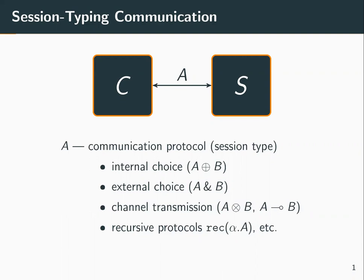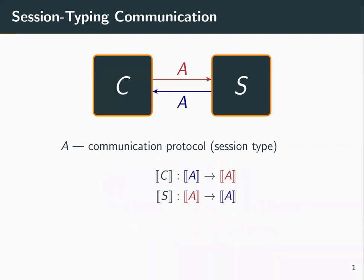Instead of having a single channel or wire carrying bi-directional communications, we'll imagine that we have a pair of wires: a red wire that carries communications from C to S, and a blue wire that carries communications from S to C. Then C will denote a continuous function from the domain of blue communications to the domain of red communications.